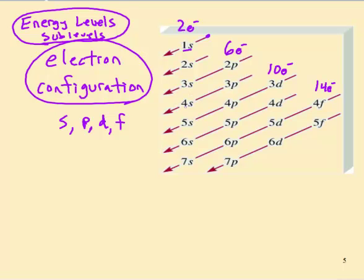Then the 3P, then the 4S, and then they start to sort of overlap. After 4S comes 3D, then 4P, then 5S, then 4D, 5P, 6S, then 4F, 5D, and etc. Right now, the periodic table goes up to 7P.